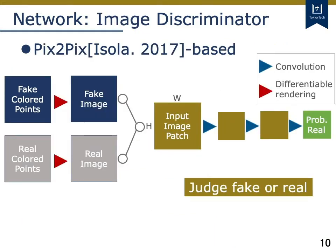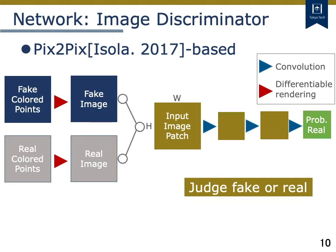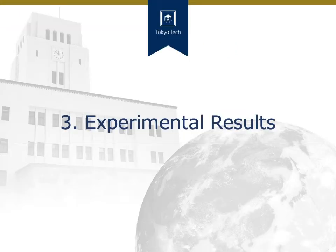Next, I will explain the image discriminator. The image discriminator is fed with images projected by differentiable rendering from fake colored points or real colored points. The image discriminator is Pix2Pix, a simple CNN, which computes the probability of real data for feature maps. In other words, the image discriminator judges whether the input rendered image is real or fake.